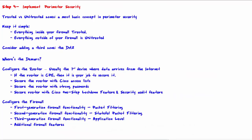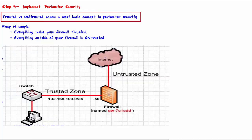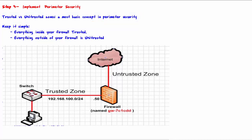Welcome to step four: implement perimeter security. The most basic concept in perimeter security is the trusted versus untrusted zones. The trusted zone is everything inside of your network, and the untrusted zone is anything outside — that is, the internet. Best practice demands there will be only one point on the perimeter where data packets can pass in and out. A firewall is placed at this single point to regulate specifically what is allowed in and what is allowed out. Everything inside your firewall is trusted; everything outside is untrusted.